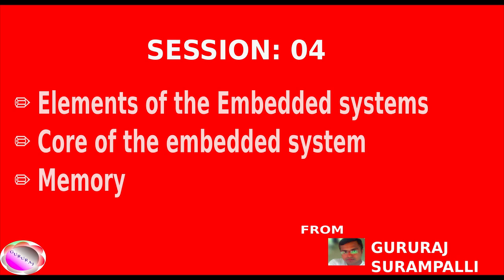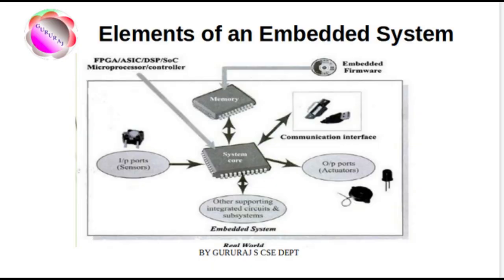Analog devices for energy metering applications are also examples that are part of your embedded system. Embedded hardware-software systems are basically designed to regulate a physical variable or to manipulate the state of some devices by sending control signals to actuators or devices connected to the output ports, in response to input signals provided by the end user or sensors connected to the input ports.